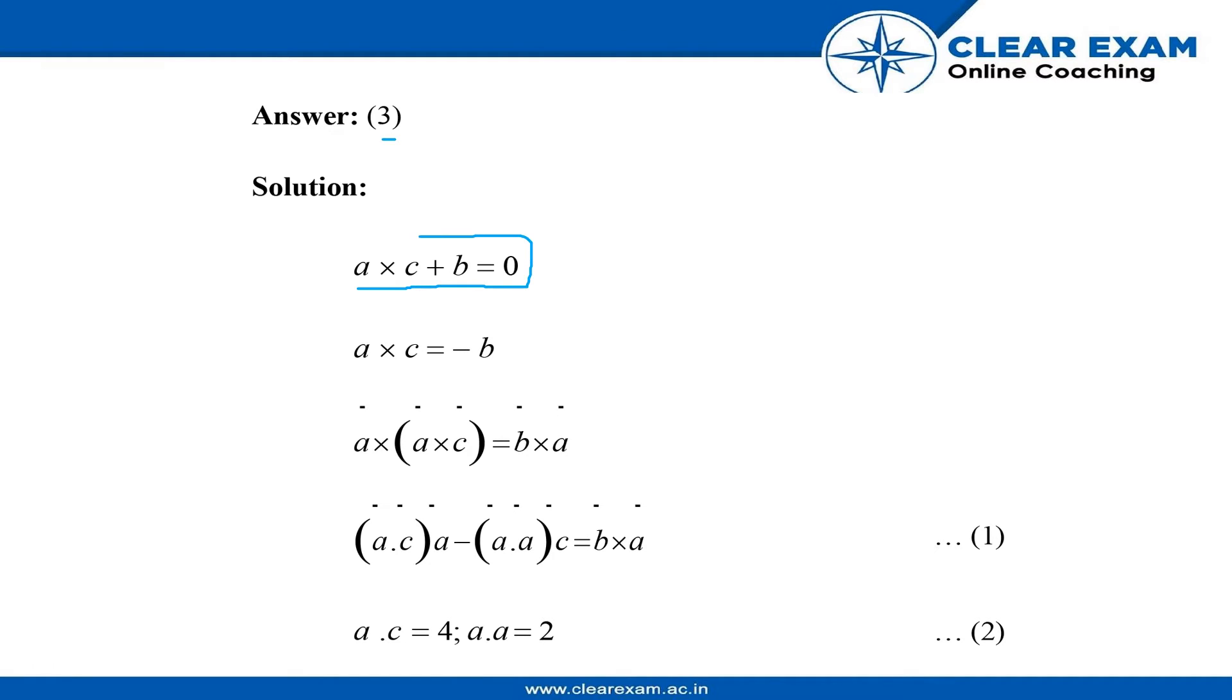...and a dot c equals four. So a cross c equals minus b, taking b to the right side. Now what we have done is we have left multiplied by vector a.